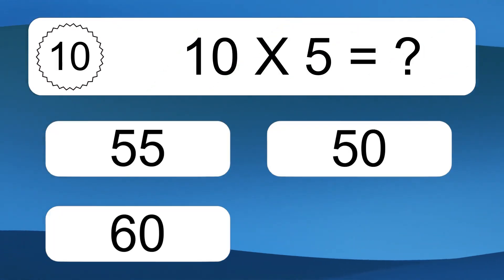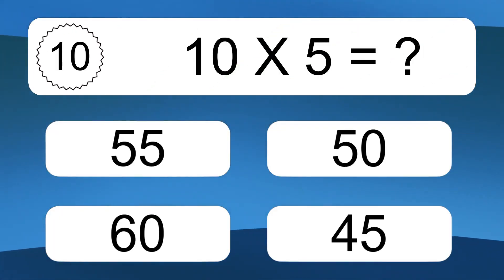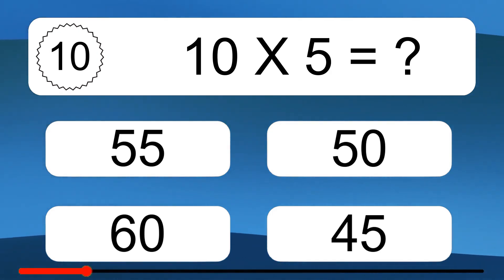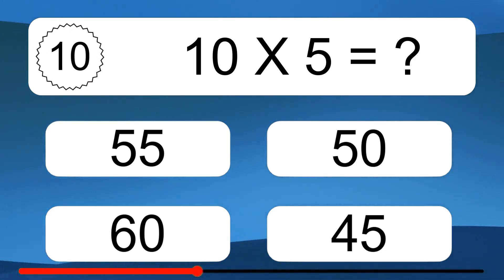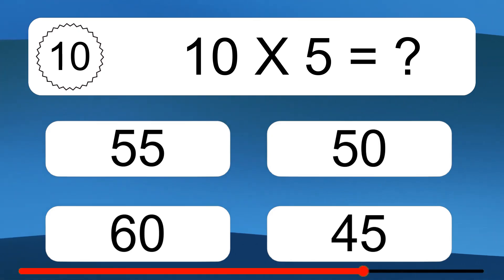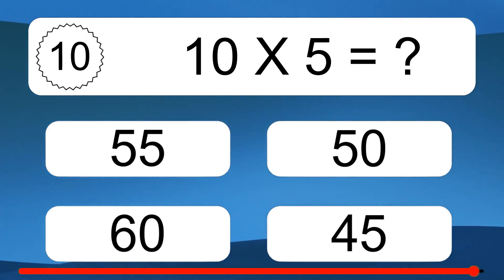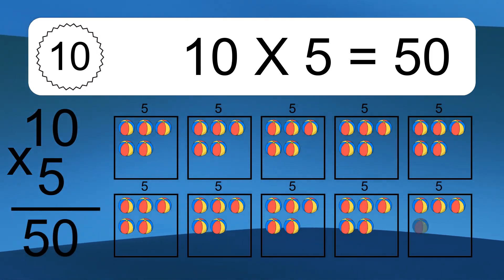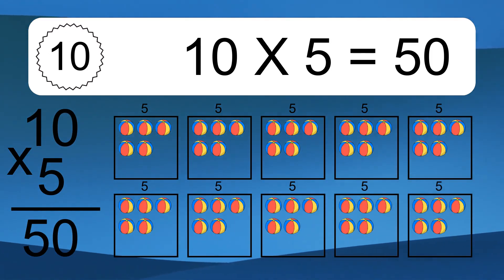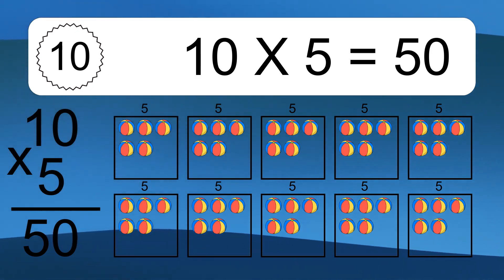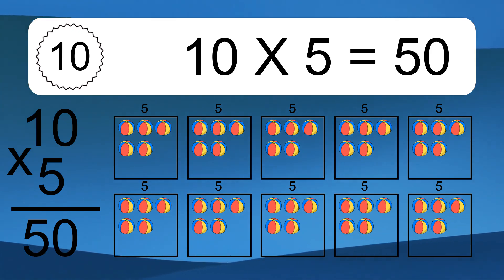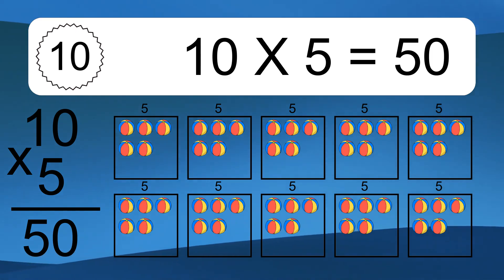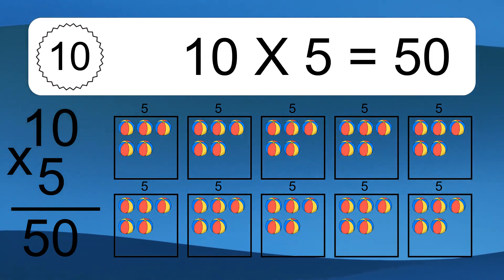10 times 5 equals what? 10 times 5 equals 50. We have 10 boxes and each box has 5 colorful balls inside. If you count all the balls in all the boxes together, you will have 10 times 5 balls. This equals 50 balls.